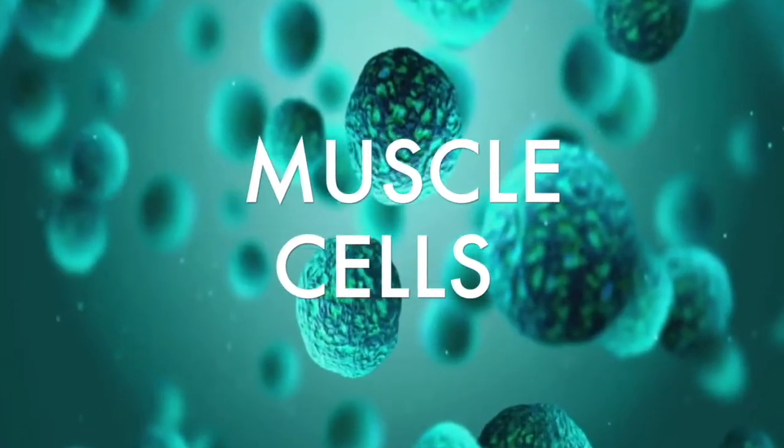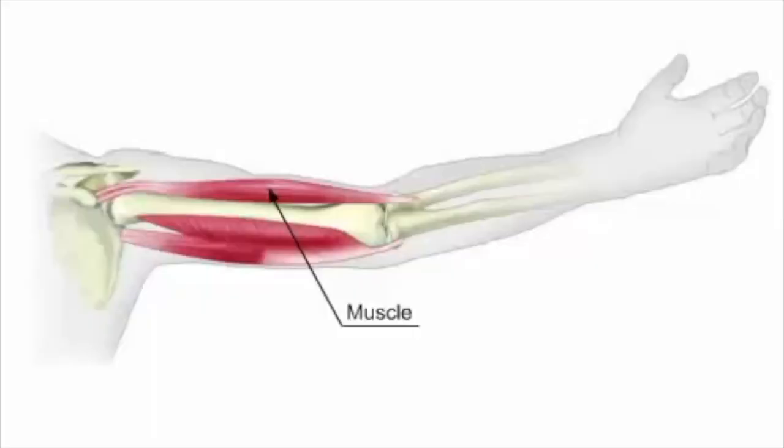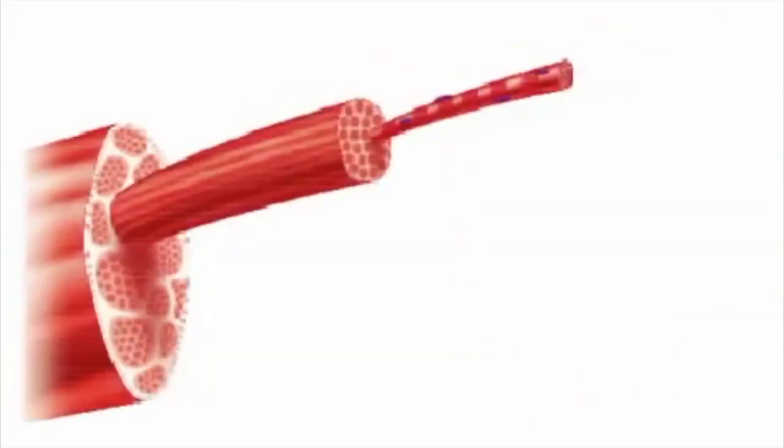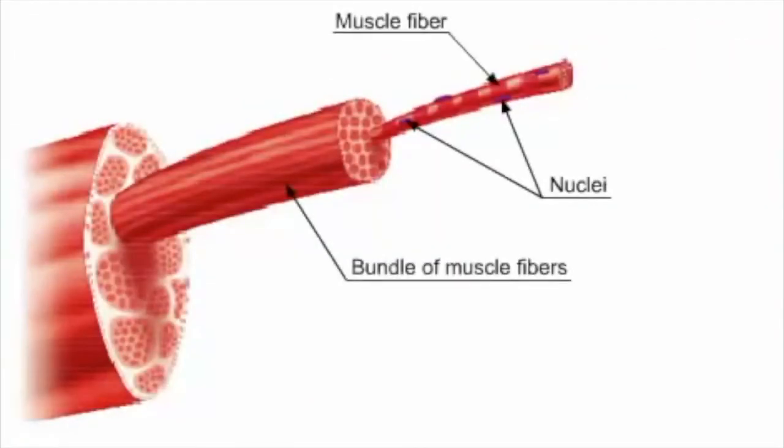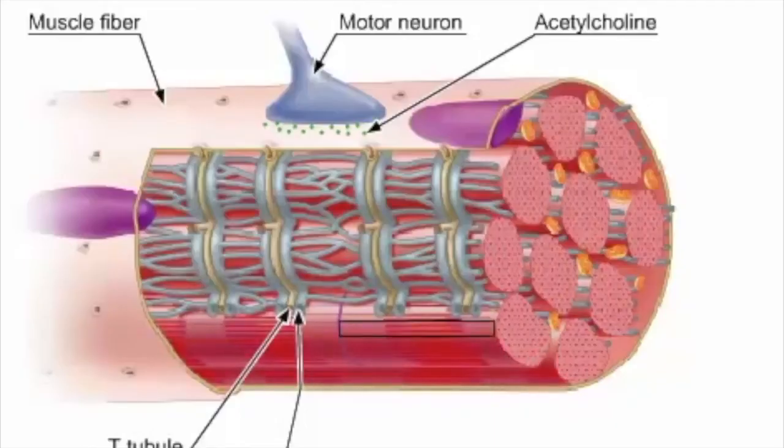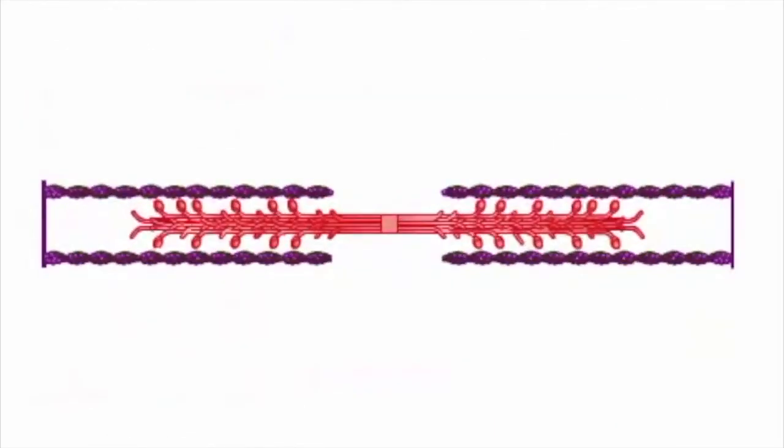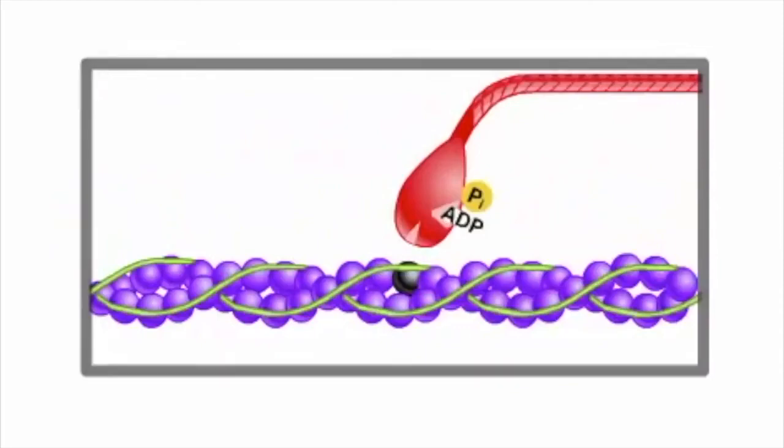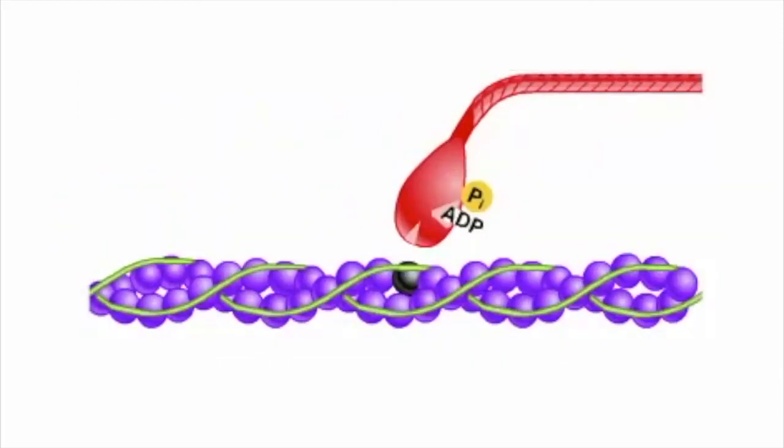Another type of specialized cells are the muscle cells. Muscle is a soft tissue found in most animals. Muscle cells contain protein filaments of actin and myosin that slide past one another, producing a contraction that changes both the length and the shape of the cell. Muscles function to produce force and motion. They are primarily responsible for maintaining and changing posture, locomotion, as well as the movement of internal organs such as the contraction of the heart and the movement of food through the digestive system.